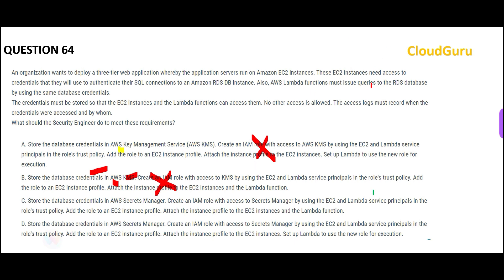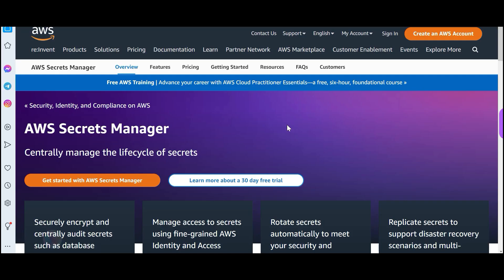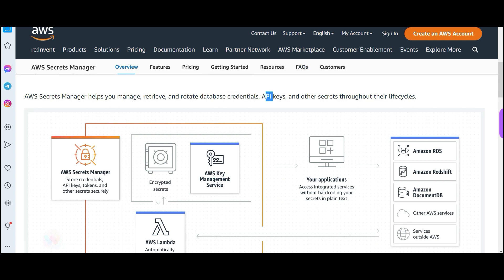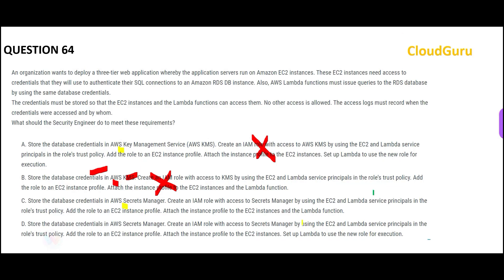Options C and D both say to put credentials in Secrets Manager, and we know Secrets Manager is used to store secrets like database credentials and API keys. Now we compare C and D. The second line looks the same — creating an IAM role, adding the role to the EC2 instance profile, and attaching the instance profile to EC2 instances. Option D says set up a Lambda to use the new role.